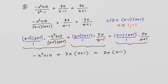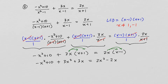The next step is to simplify. We have negative x squared plus 10, and in the second term we distribute to get 3x squared plus 3x. On the other side we distribute to get 2x squared minus 2x. This is a quadratic equation with x squared terms on both sides. Combining like terms on the left: negative x squared plus 3x squared gives positive 2x squared, plus 3x plus 10. On the right we have 2x squared minus 2x, which cannot be combined further.